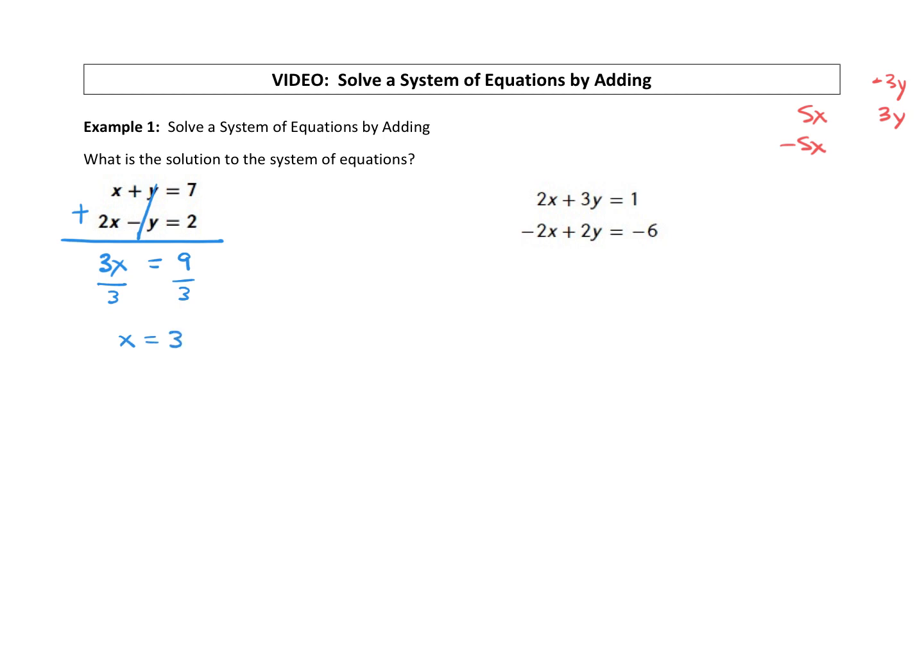All right, we have half of our solution. Remember solutions are ordered pairs. We know that the x is a 3. We just have to figure out what the y is. So we're going to take that 3, plug it back into either the top equation or the bottom equation. You'll get the same answer regardless of which equation you choose. So it just depends on what looks easier to you. To me the top equation looks easier. That x plus y equals 7. So I'm going to replace the x with a 3 and then plus y equals 7. So I just plugged the x into this top equation. Solving for y, I'm going to subtract 3 from both sides. We get y equals a positive 4. So the other half of our solution is a positive 4.